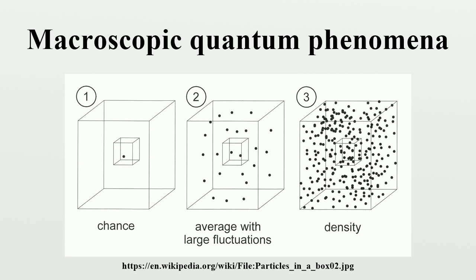Case 2: If the number of particles is a bit larger, there are usually some particles inside the box. We can define an average, but the actual number of particles in the box has relatively large fluctuations around this average.